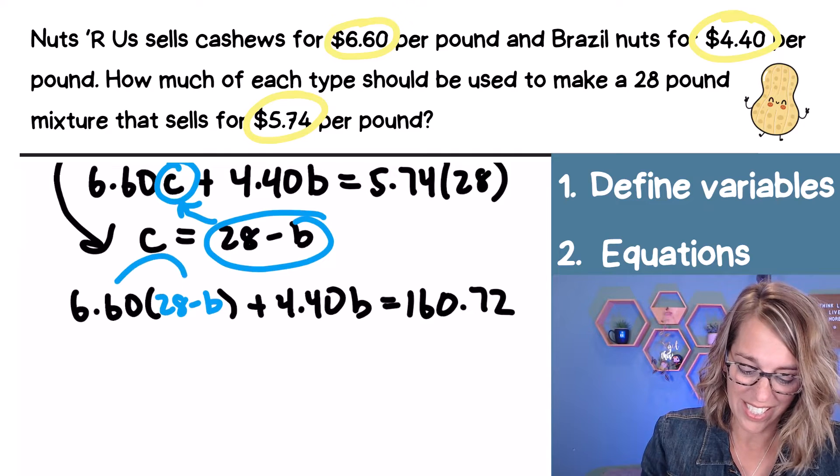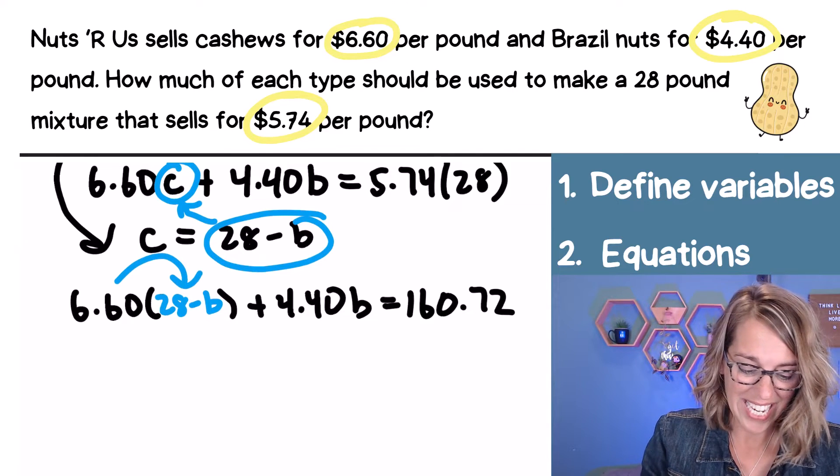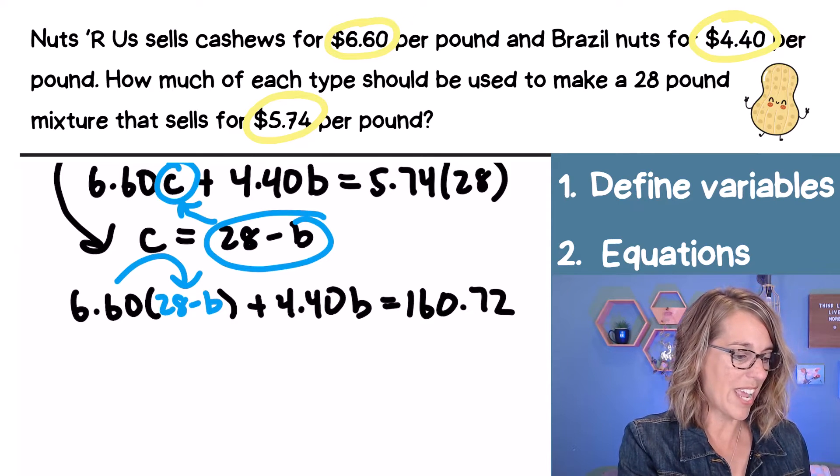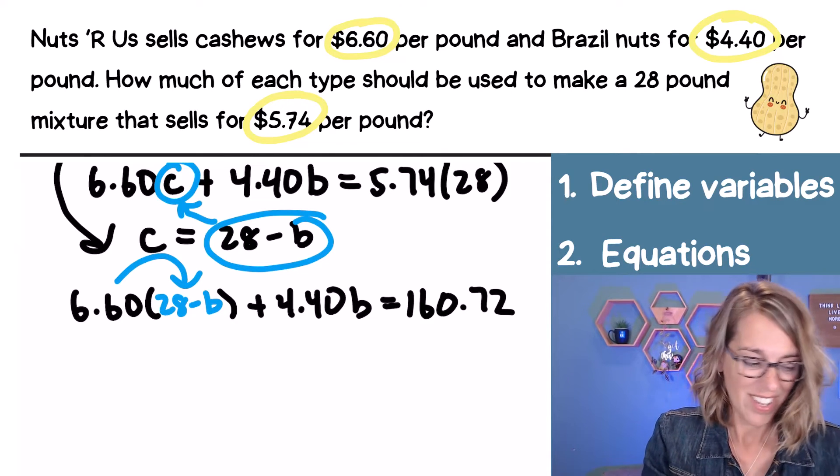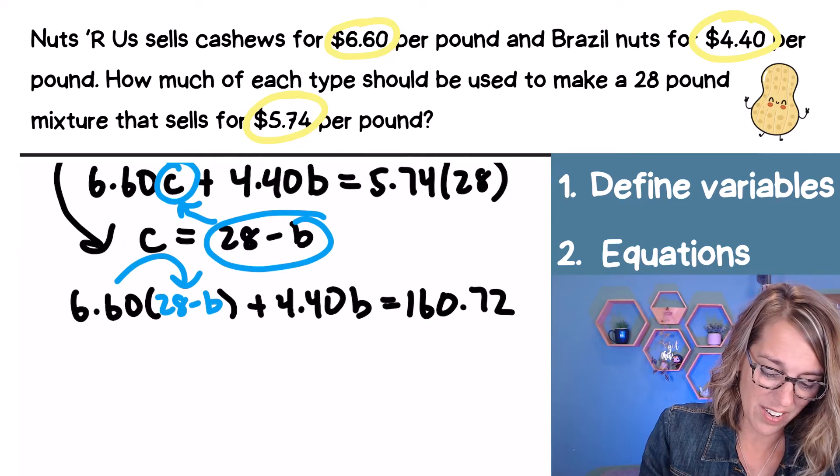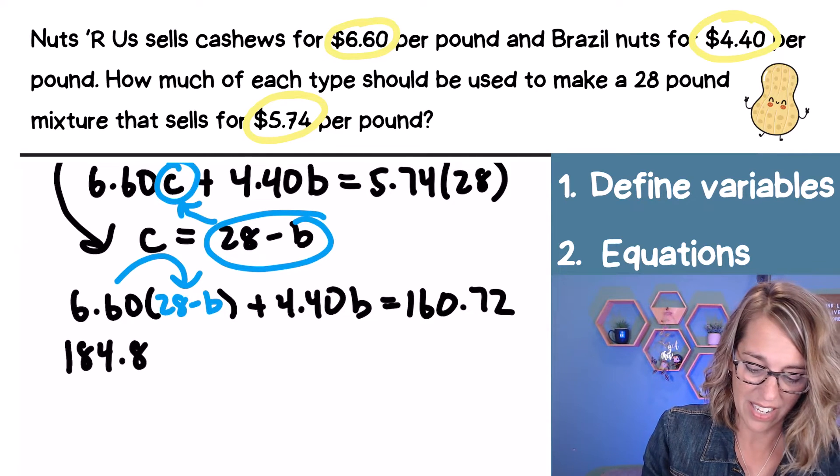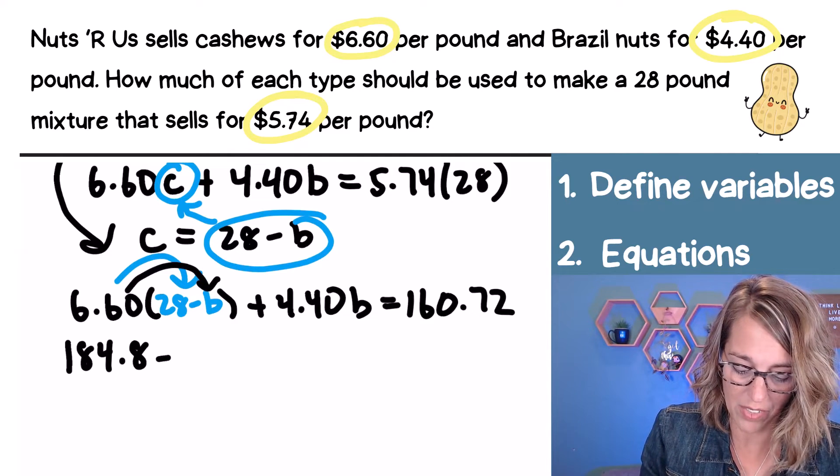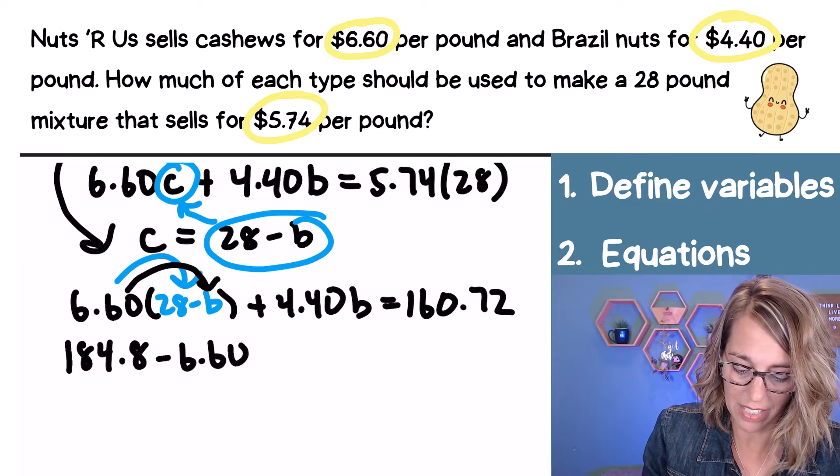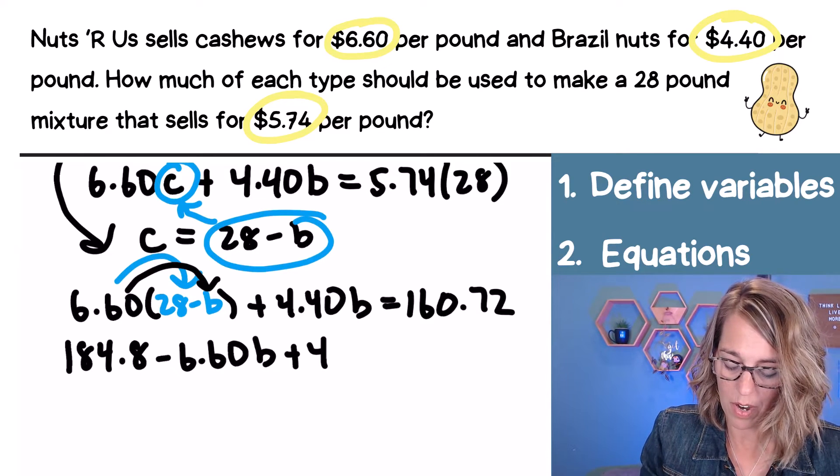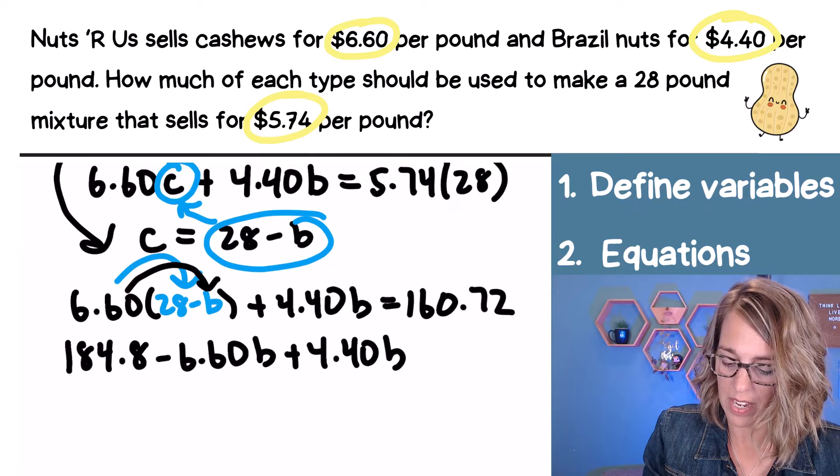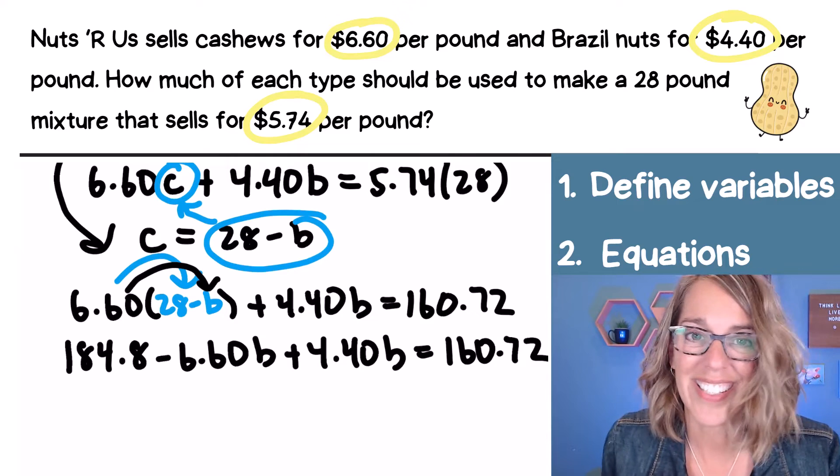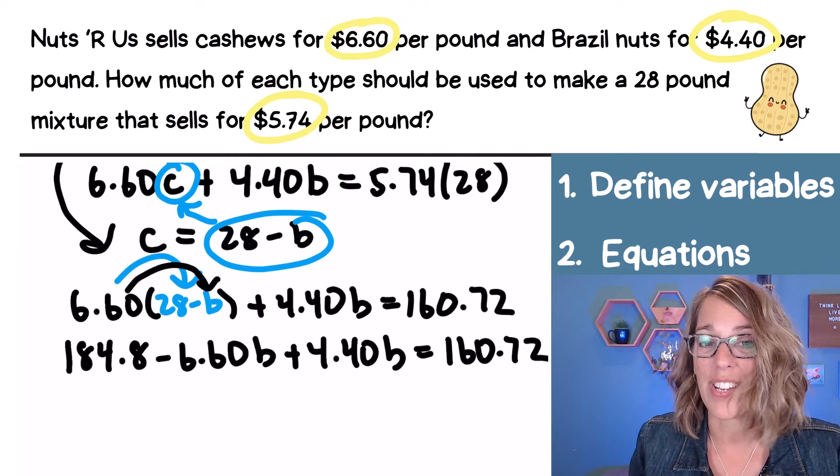Now I can distribute. So 660 times that 28, and I need my calculator again. So I'm going to do 660 times 28 for that first distribution. So if you're following along with me, you're going to get 184.8. And then 660 times the B, nothing to do there. I'm going to write the negative sign 660B plus 440B is equal to 160.72. There's a lot of decimals going on, but you'll notice that I really have a nice equation. I have B terms and I've got numbers.